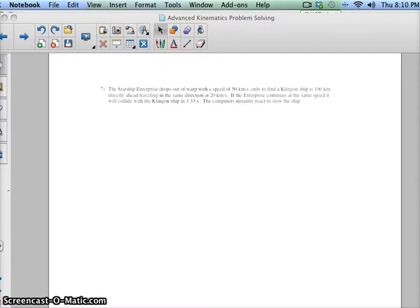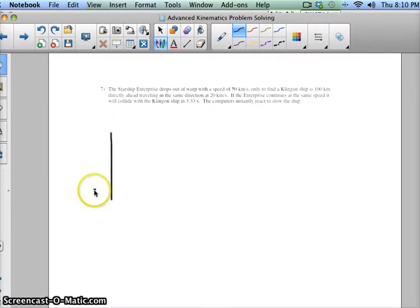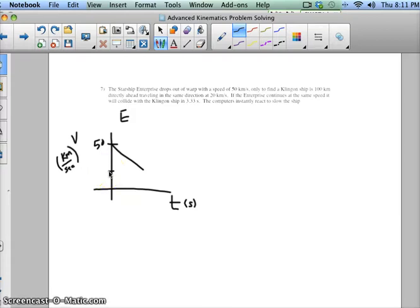I would start with a velocity time graph for the Enterprise. The Enterprise starts with a velocity of 50 kilometers per second, and the final velocity of the Enterprise is going to be 20 kilometers per second. That's because if the Enterprise is going the same speed as the Klingons, then it's not going to overtake them anymore. It's just going to maintain the same distance from them.